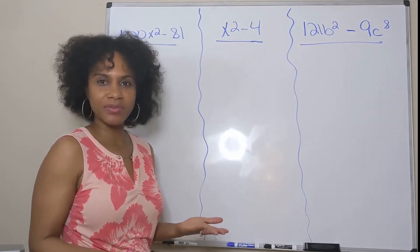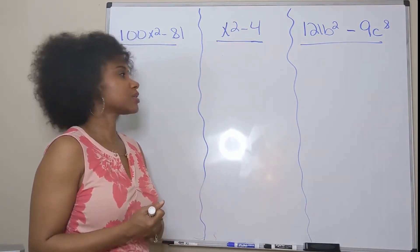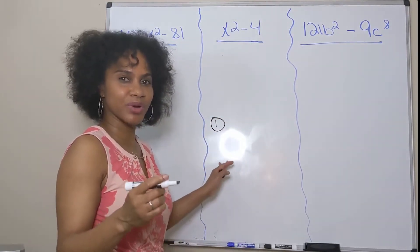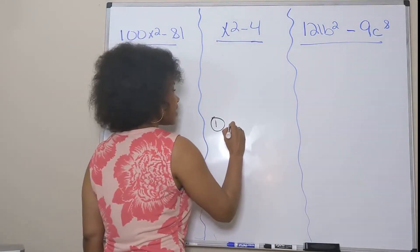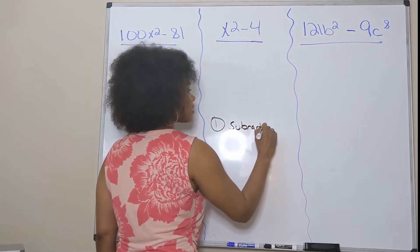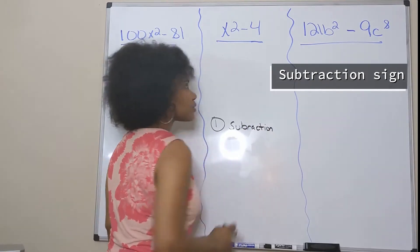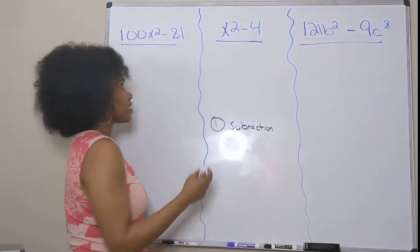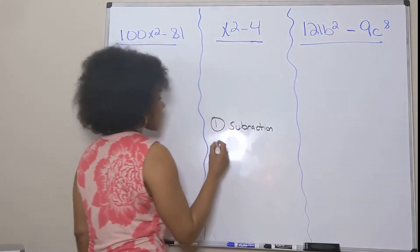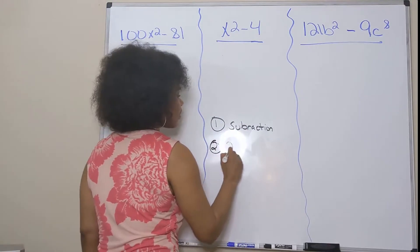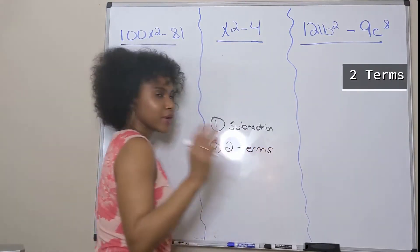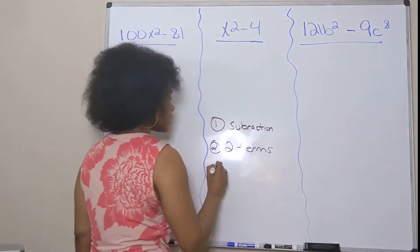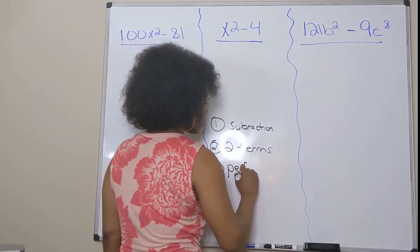So what is the criteria for a difference of squares? First, think about the word 'difference' — that means subtraction, so you have to have a subtraction sign. In these three cases we have a minus sign meaning subtraction. You also have to have only two terms.